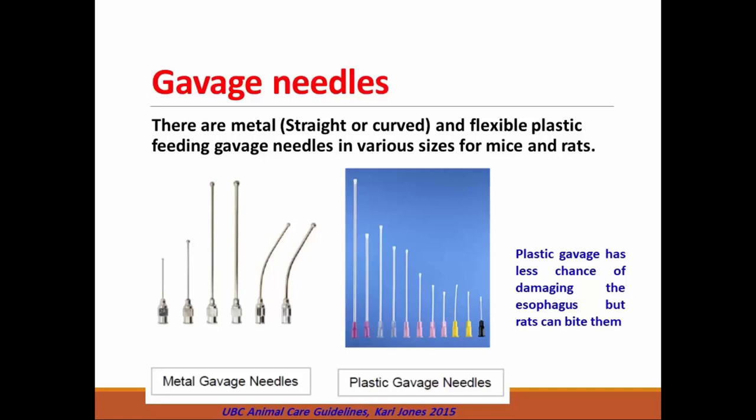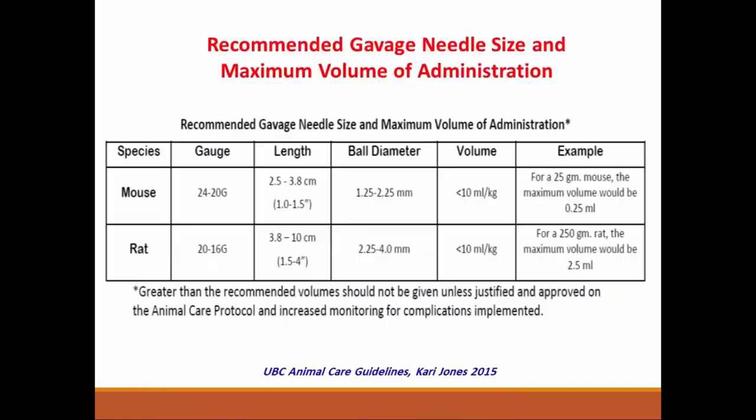Metal gavage needles have the advantage that the rat cannot bite them. Plastic gavage needles have less chance of damaging the esophagus, but rats can bite them, so they are more suitable for mice because mice cannot bite through them. This table summarizes the recommended gavage needle size and maximum volume of administration in both mouse and rat.